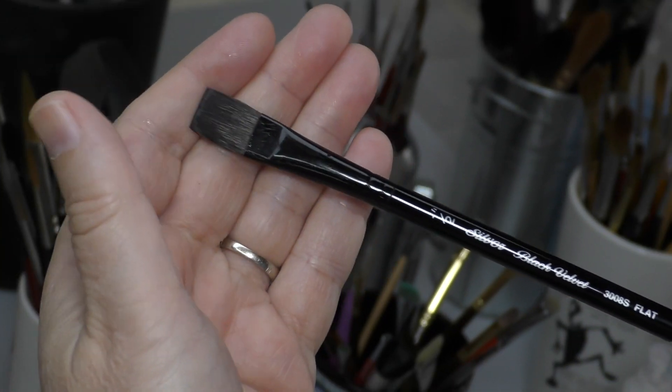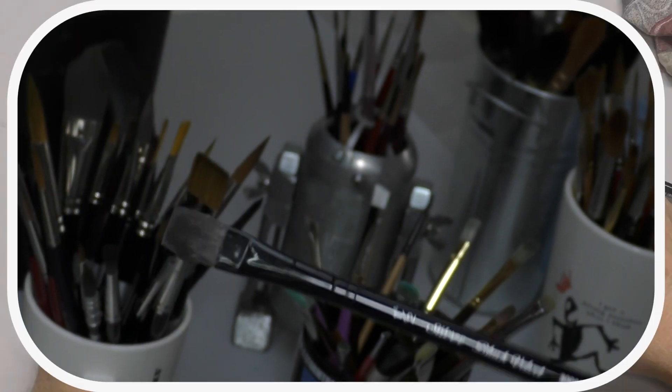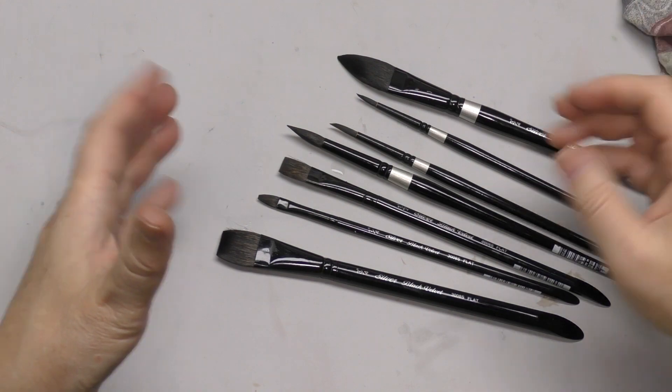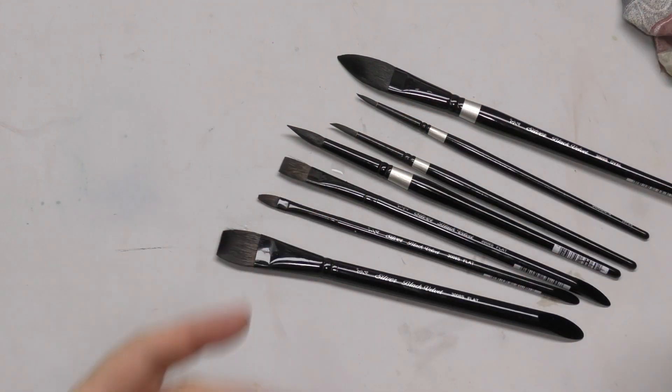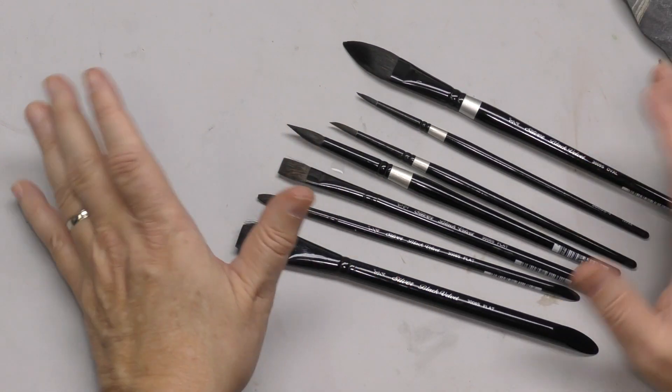I also love their flats. I use the flats quite a bit. These are great for glazing. Really, any of the brushes, any of the black velvets are great for glazing. Putting a thin color layer over another color, because the softness of the brush is less likely to lift up the color underneath. Well, when I need them, when I use them, they're fantastic performers.